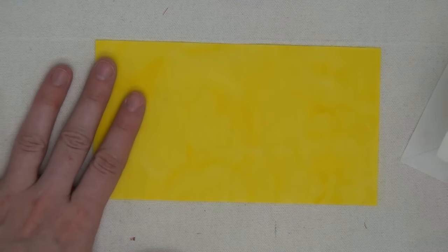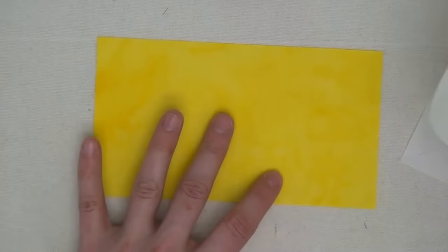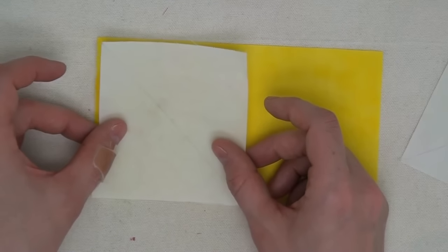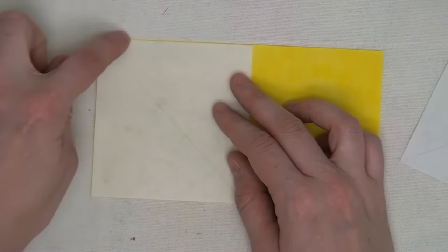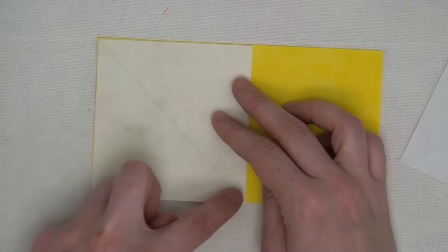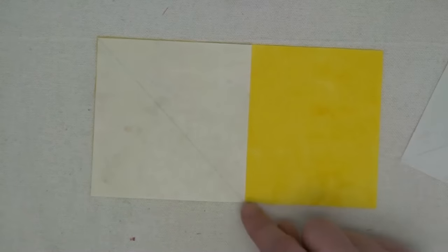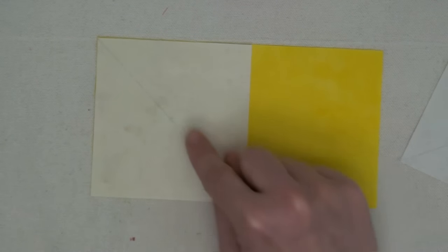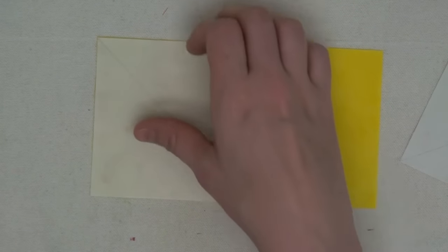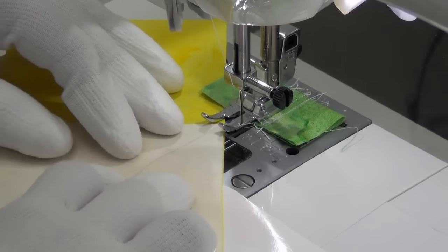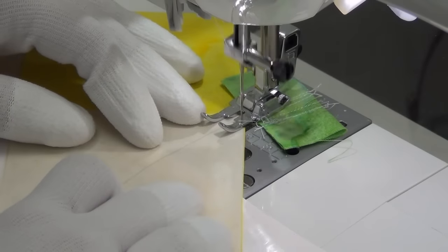Now let's start working on our flying geese units. We're going to take our fabric C rectangle and our fabric D squares and line this up so that the top, the left side, and the bottom edge are really perfectly aligned. We're going to take this to the sewing machine and begin stitching right across on top of that marked diagonal line. I've got my pieces nicely lined up and I'm just going to stitch right onto that marked line.